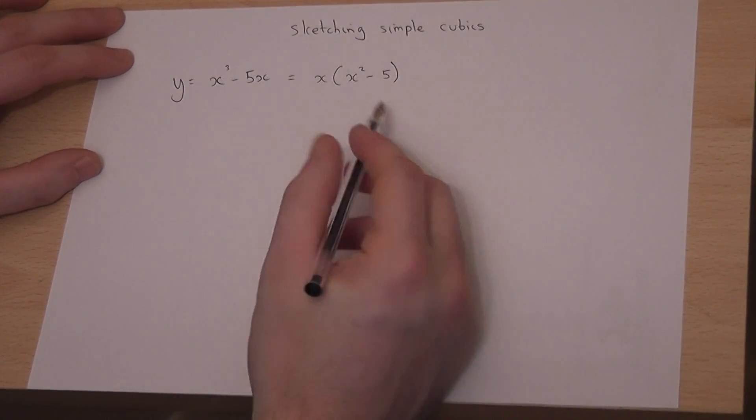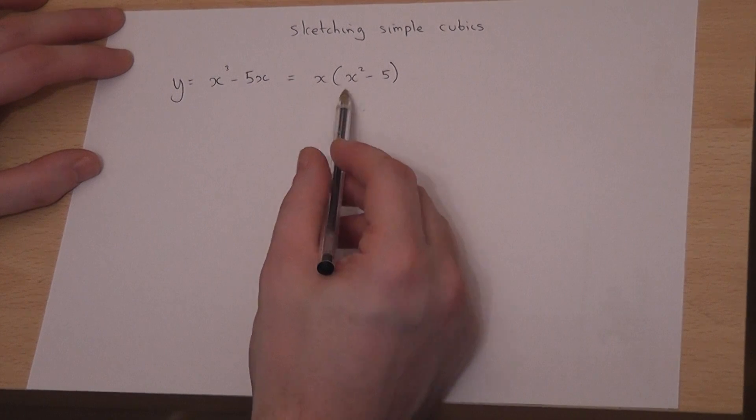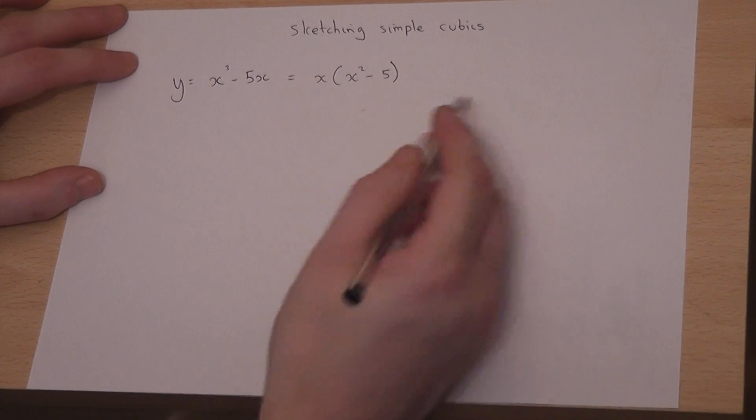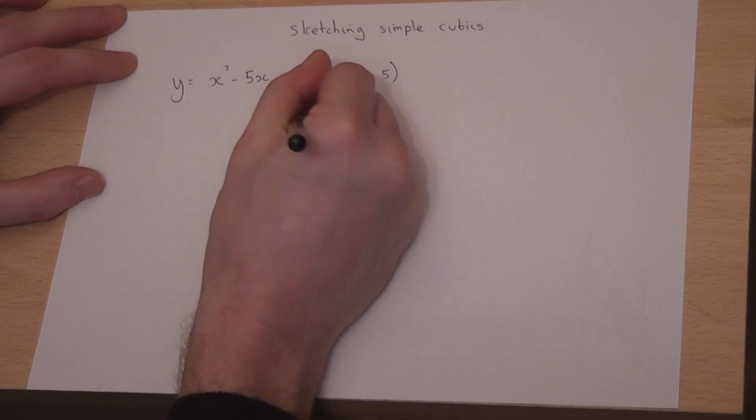I can therefore find where this graph hits the x-axis. It is where y equals 0, so either x equals 0, that's one point where the graph cuts the x-axis,